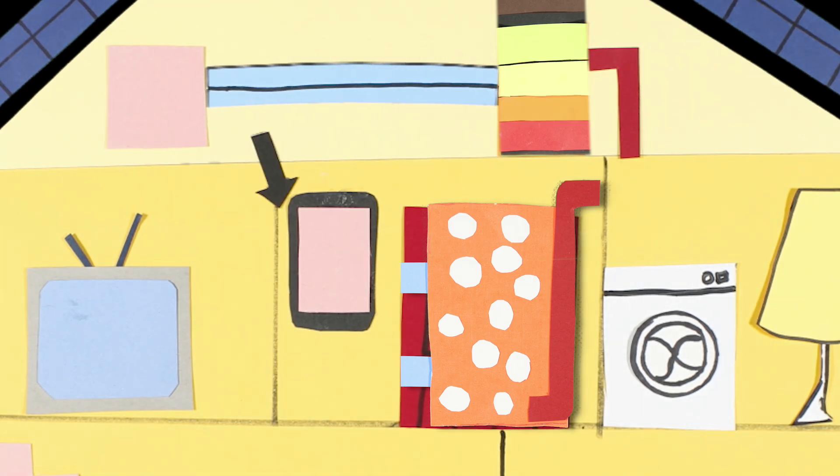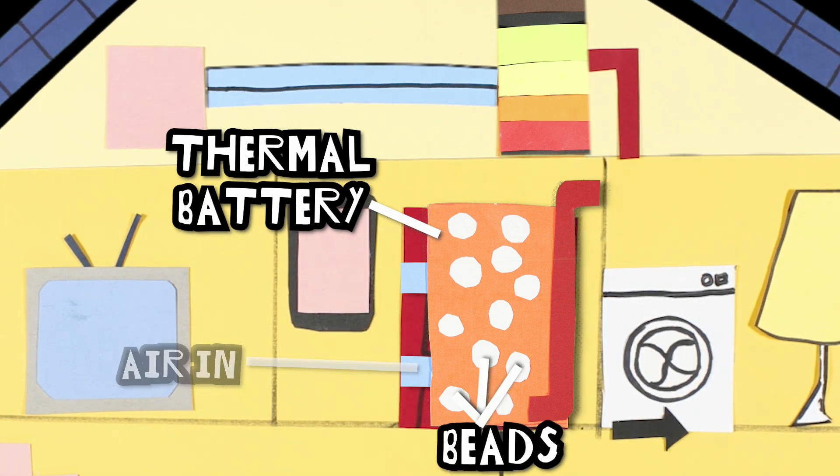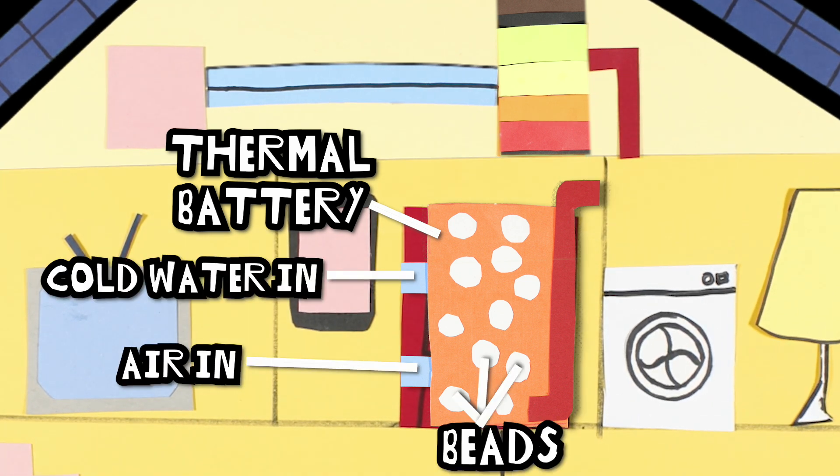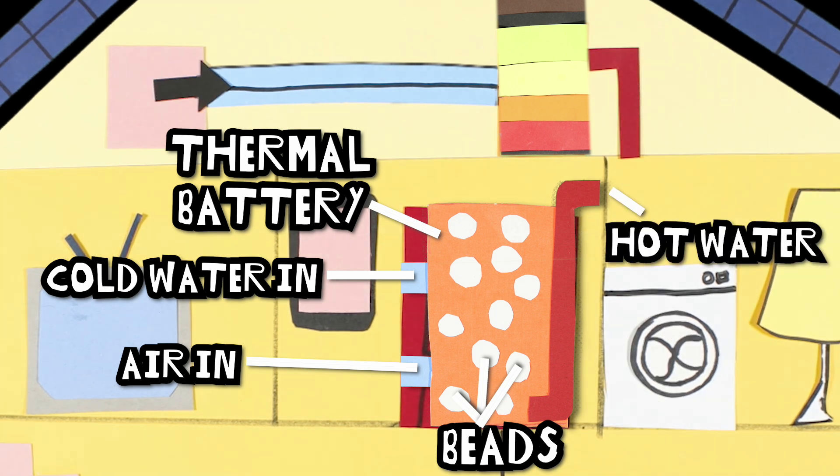Thermal batteries, also charged with types of solar and wind power, use beads containing salt. When activated by air and water, it heats the beads and releases hot water to the house.